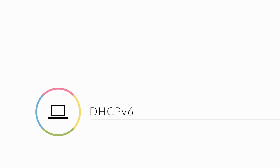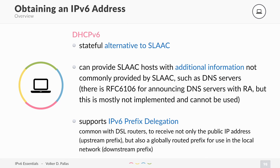We also have another option called DHCPv6, which is similar to DHCP for IPv4. It is a stateful alternative to SLAAC. Stateful means we can track the state — somebody has a table listing all the IP addresses that are used on this link and have been handed out by DHCP. DHCPv6 is also used to provide SLAAC hosts with additional information not provided by SLAAC, such as DNS servers.